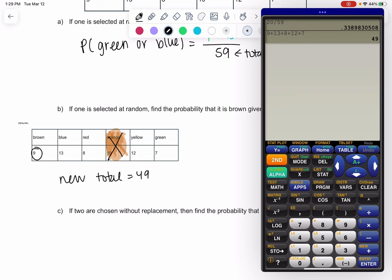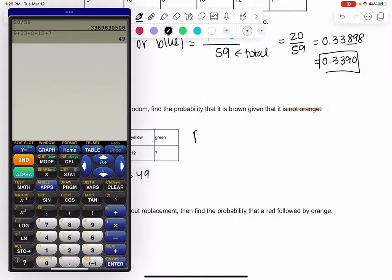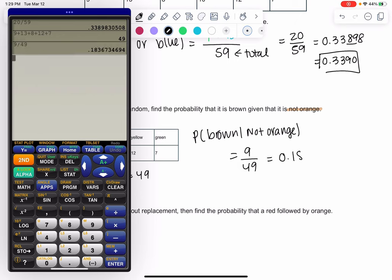And then we just want to find how many browns there are. So there's nine browns out of 49. Probability that it's brown given not orange - the given just changed the total. So there's nine browns and since it's not orange my total is only 49 instead of 59, and we get a probability of 0.1837.